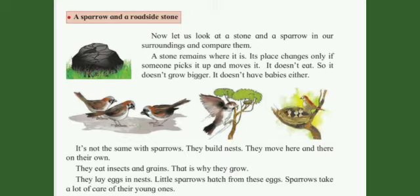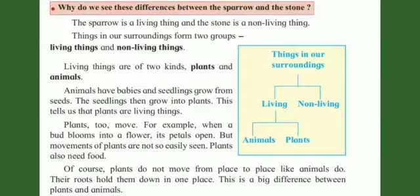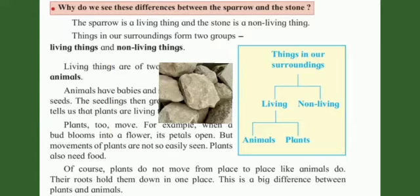Sparrows build nests. They move here and there on their own. They eat insects and grains — that is why they grow. They lay eggs in nests, and little sparrows hatch from these eggs. Sparrows take a lot of care of their young ones. Now let's understand why we see these differences between the sparrow and the stone. The sparrow is a living thing and the stone is a non-living thing.